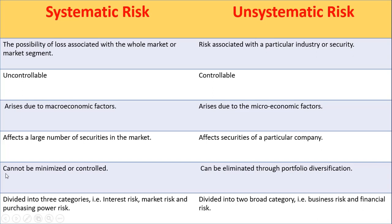Systematic risk cannot be minimized or controlled, so we can say that systematic risk is undiversifiable risk. Unsystematic risk, on the other hand, can be eliminated through portfolio diversification, so we can say that unsystematic risk is diversifiable risk.